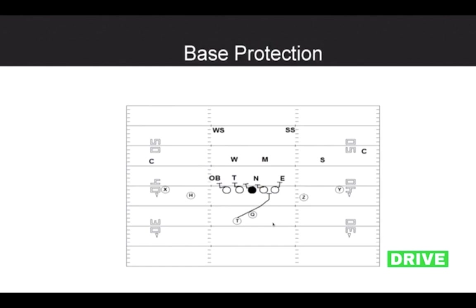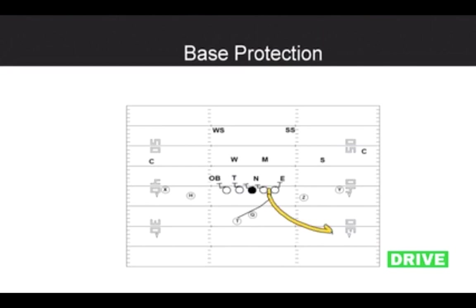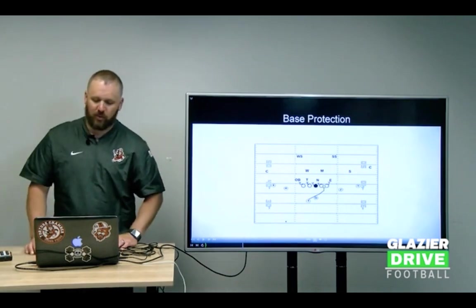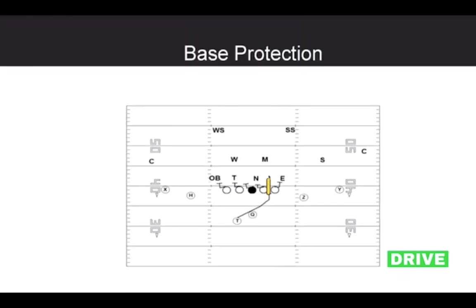The running back crosses and he's reading one to two — responsible for the B-gap to the edge. No threats in the B-gap, he gets his eyes to the edge. No threats there, he can peek inside one more time and then check down. He doesn't stay in if there's nowhere to block — we've worked him checking down in the middle. That's our base first protection.